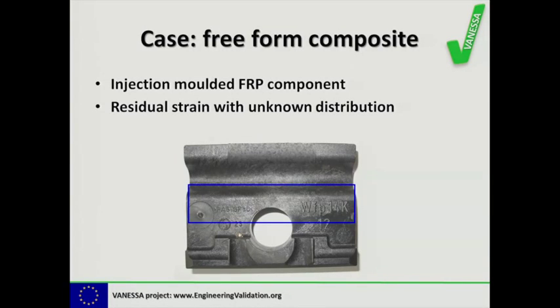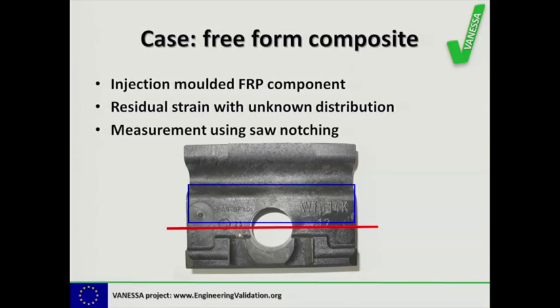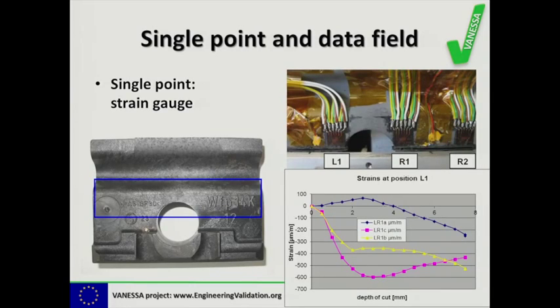To get these residual strains measured, we perform a measurement using saw notching to relieve the strain. You could opt for having single points measured using a set of strain gauges. On the right, we have applied a set of three rosettes just above the saw cut on this component,